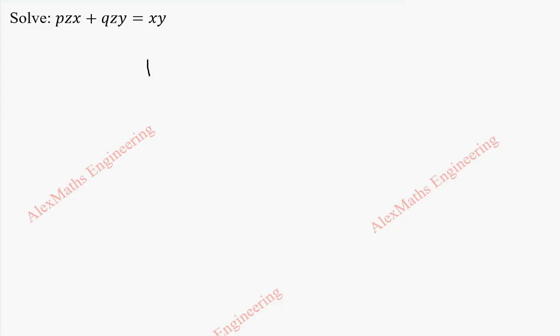This is of the form capital P into small p plus capital Q into small q equal to capital R. Rewriting this equation, we have zx and that is multiplied with small p. By writing this, we can understand that capital P is zx.